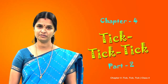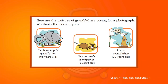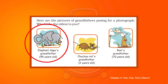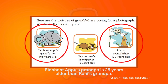Now let us try to find the answers for some questions based on this. How much older is Elephant Appu's grandpa than Rani's grandpa? To find the answer, we need to find the difference between 95 years and 70 years. That means 95 minus 70 which equals 25. So Elephant Appu's grandpa is 25 years older than Rani's grandpa.